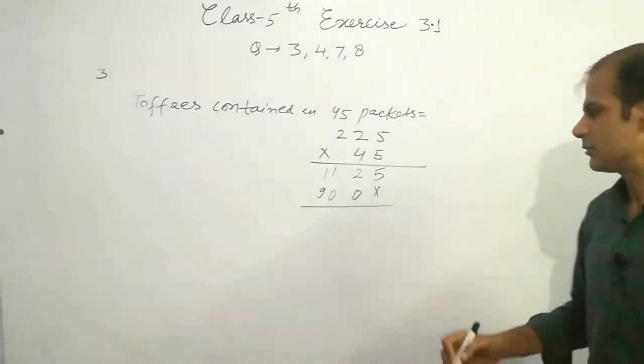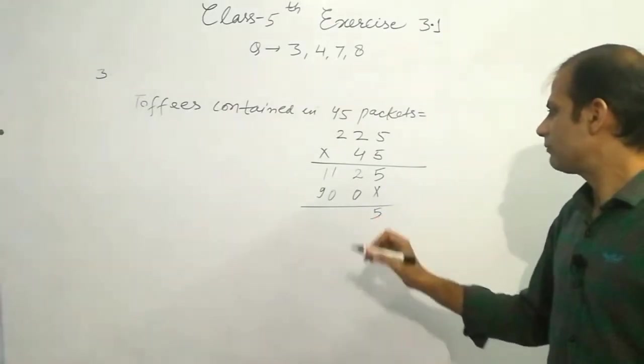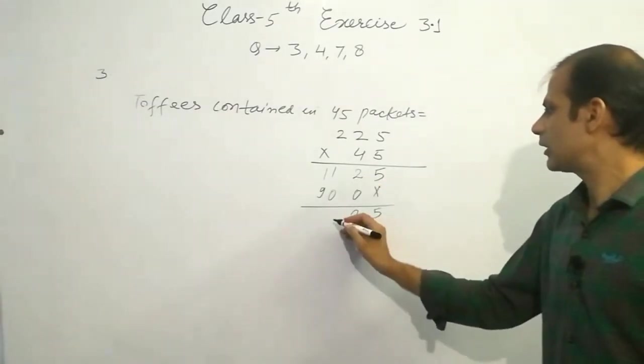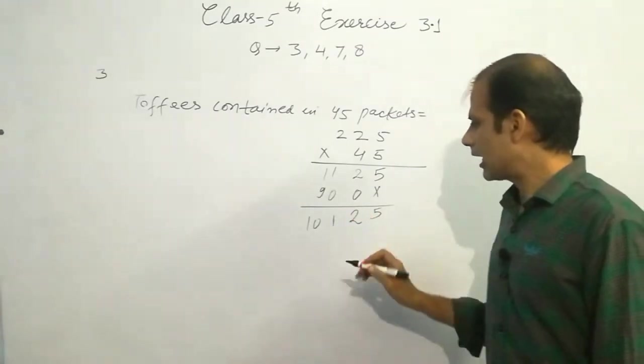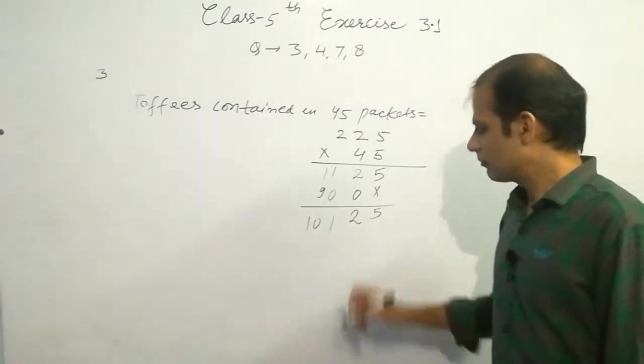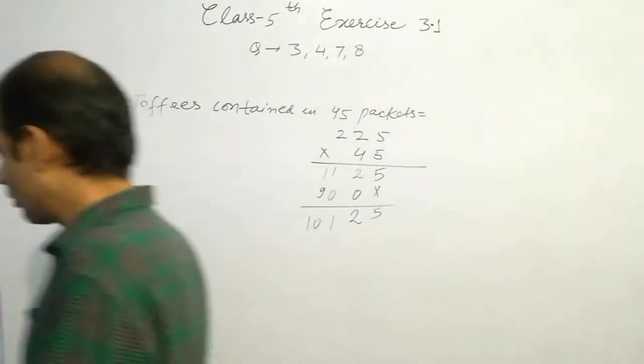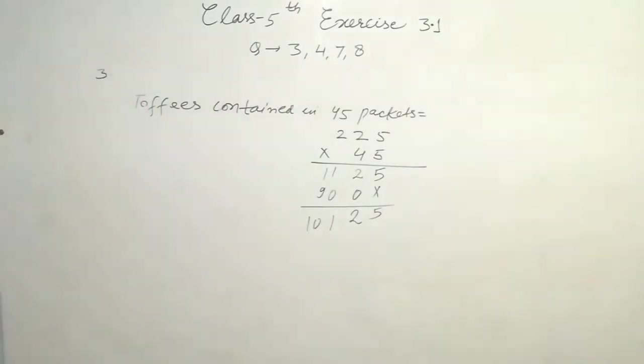Add these numbers. It is 5, it is 5, it is 2, it is 1, it is 10. So the answer is 10,125 toffees. It is question number 3 of exercise 3.1, 10,125. Students note it down.